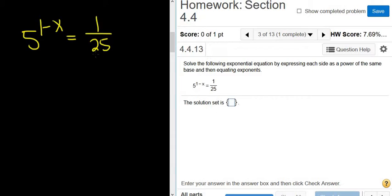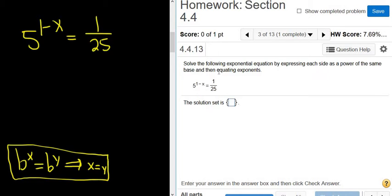So the goal is to write both sides using the same base. Because if you have something like b to the x equals b to the y, then you can drop the b's and you get x equals y. That's a rule that we can use to solve equations like this, and it tells you to do it in the problem, which is really nice. So obviously the b here is 5 because you see the 5.